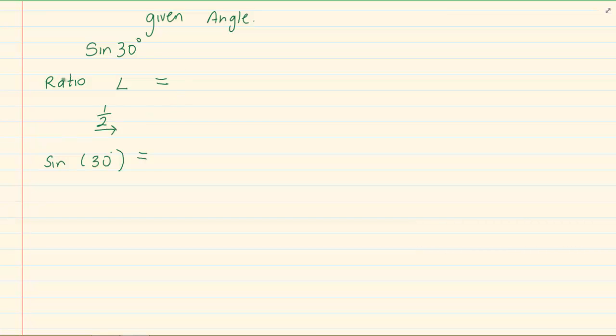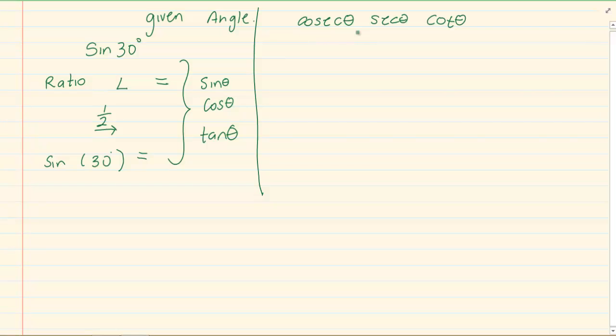Now the way that I gave you where it's a ratio, angle and equal to sign would work for the basic sin, cos and tan. But what happens when we are given cosec, sec or cot?